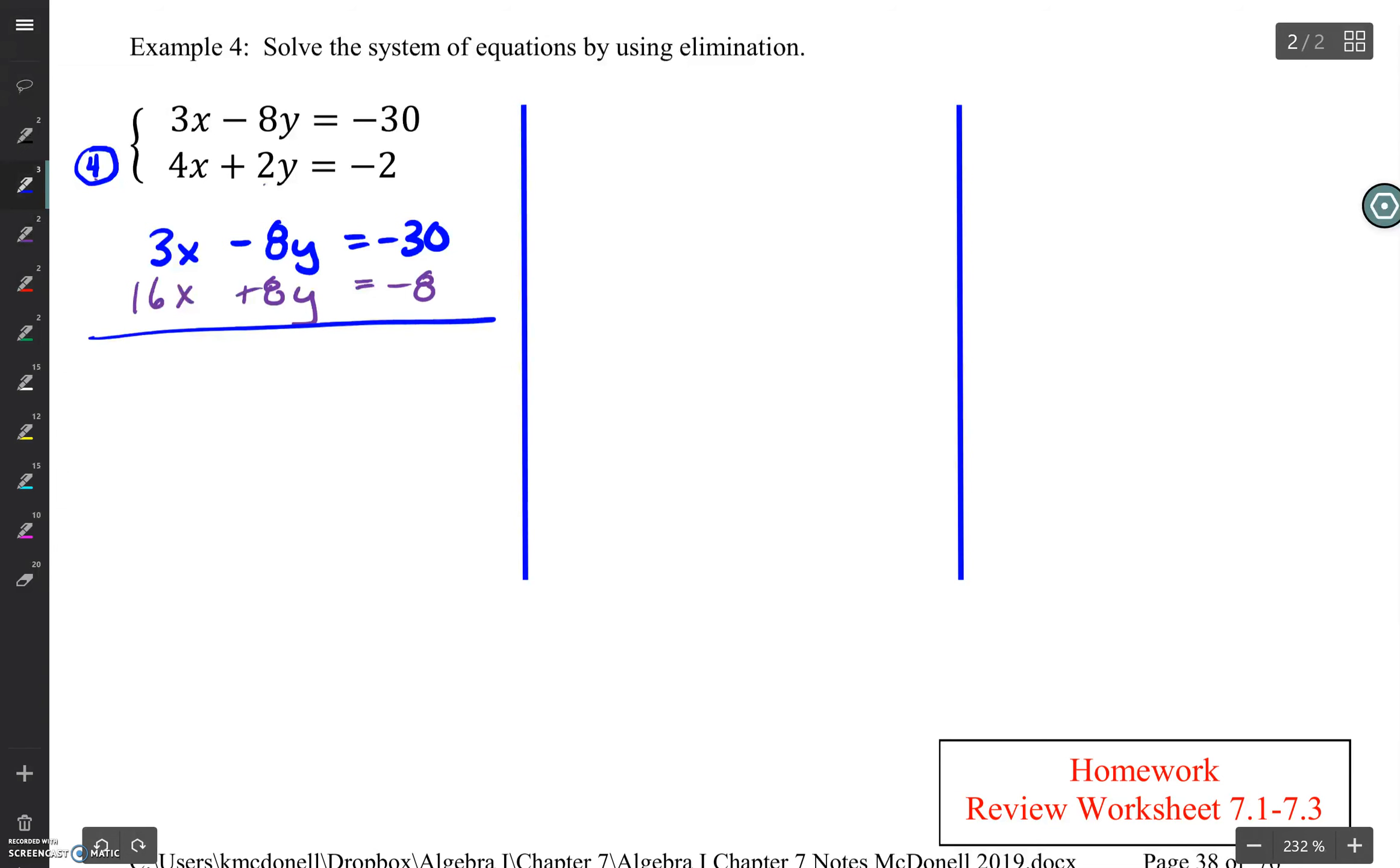So let's add these up. 3x plus 16x is 19x. Negative 8y and positive 8y drop out, which is the whole idea of eliminating one variable. And negative 30 plus negative 8 is negative 38.